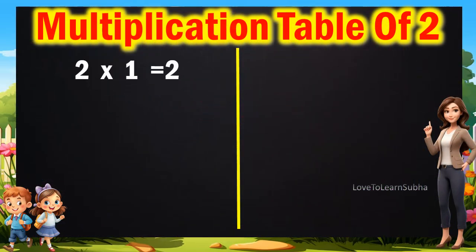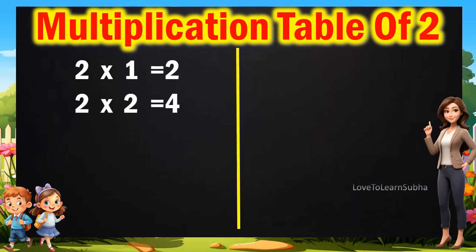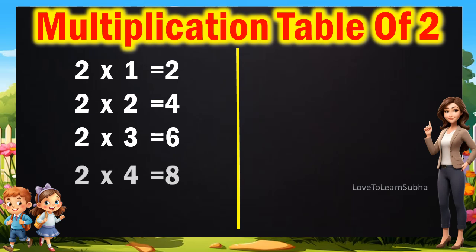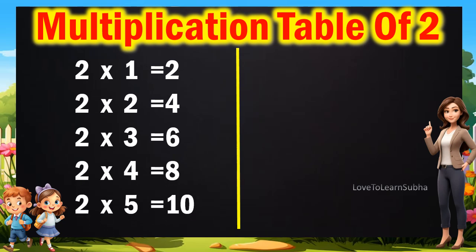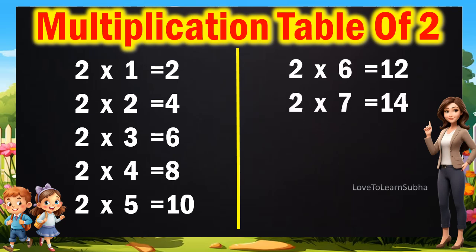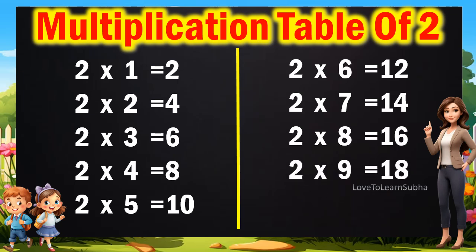2 1s are 2, 2 2s are 4, 2 3s are 6, 2 4s are 8, 2 5s are 10, 2 6s are 12, 2 7s are 14, 2 8s are 16, 2 9s are 18, 2 10s are 20.